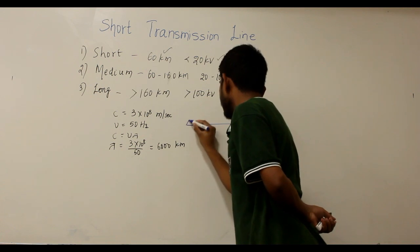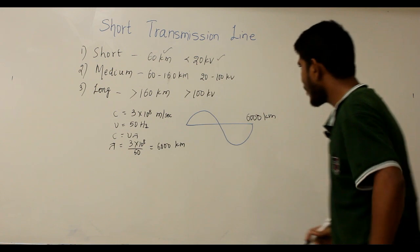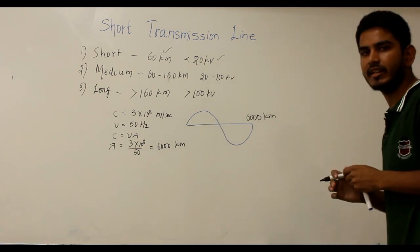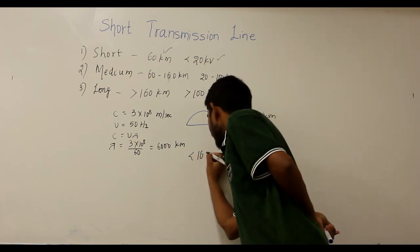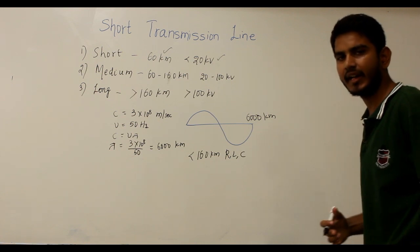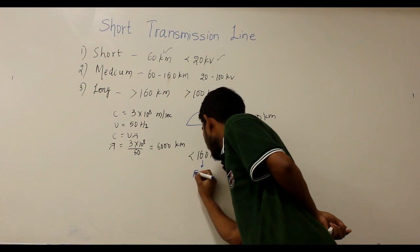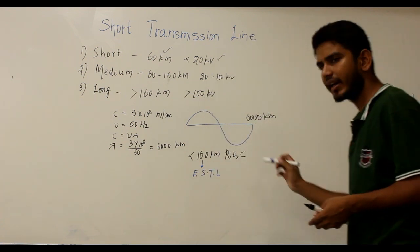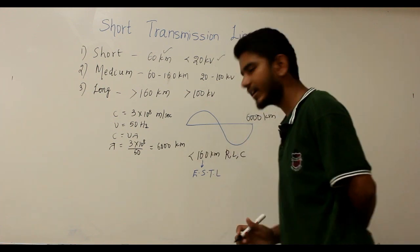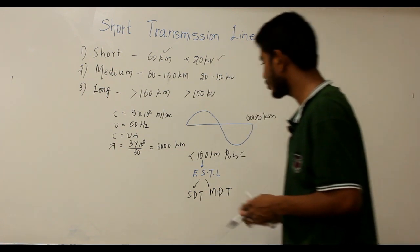So the wavelength of the power being transmitted is 6000 kilometers. Comparing this with the generally used line lengths, those line lengths are very small. For this reason, for transmission lines up to 160 kilometers, the parameters R, L, and C are taken to be lumped or concentrated and not distributed. Such lines below 160 kilometers are called electrically short transmission lines.